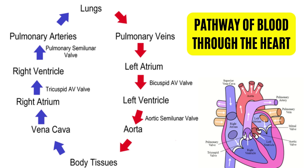All you need to remember is that on the right side, deoxygenated blood enters the right atrium through the vena cava. The deoxygenated blood is then transferred to the right ventricle. Between the right atrium and right ventricle is the atrioventricular valve. The right ventricle pumps the blood to the lungs via the pulmonary artery, which also has a semilunar valve. After getting oxygen, the blood returns to the left atrium via the pulmonary vein.